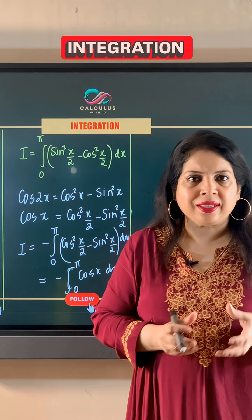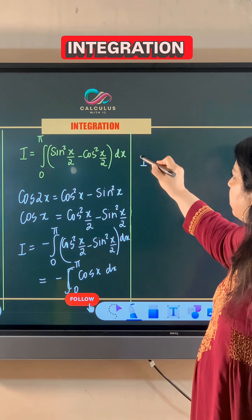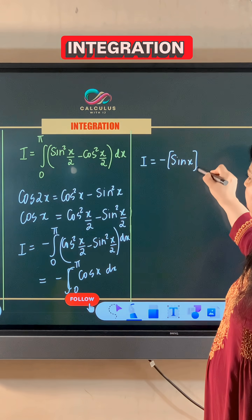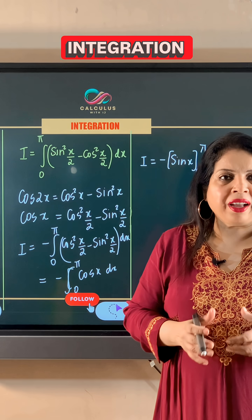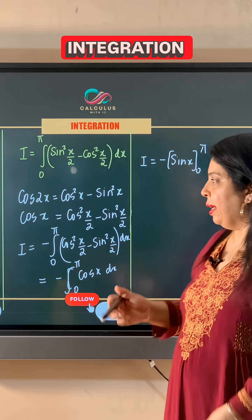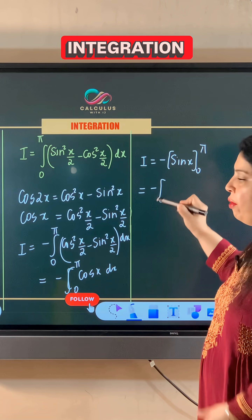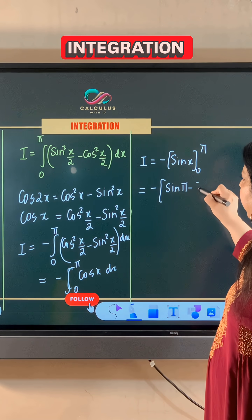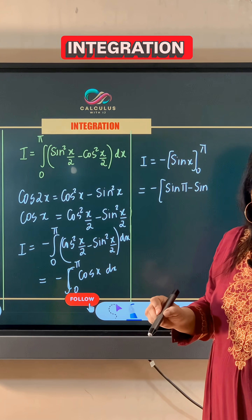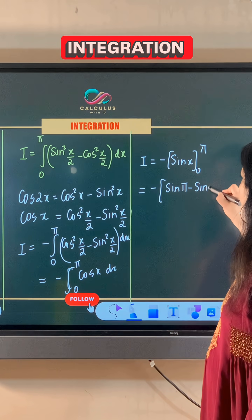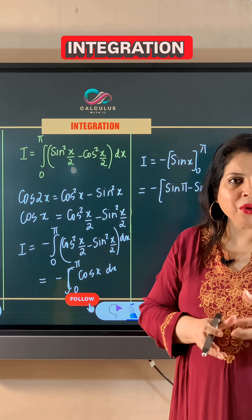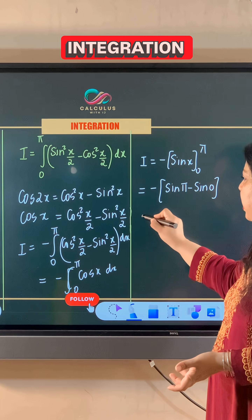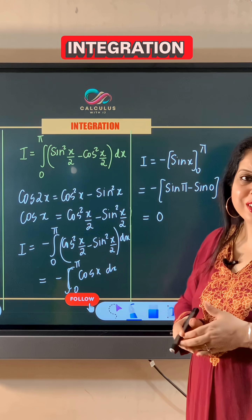The integral of cos x is sin x. So this becomes negative sin x, evaluated from 0 to π. Plugging in the upper limit: sin π = 0. Plugging in the lower limit: sin 0 = 0. So the result is negative of (0 minus 0), which equals 0. Our final answer is 0.